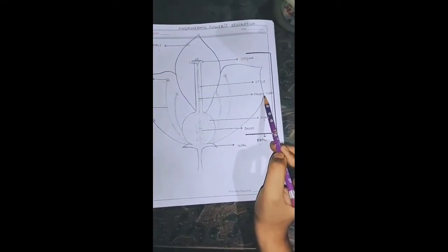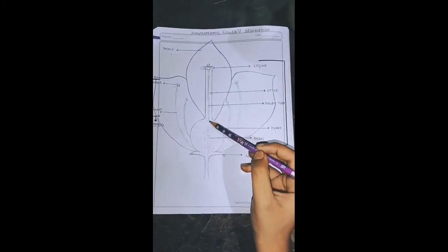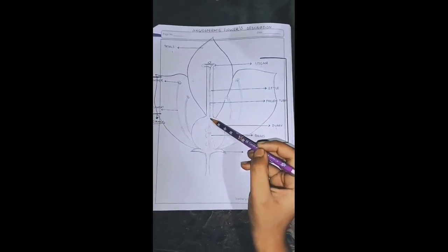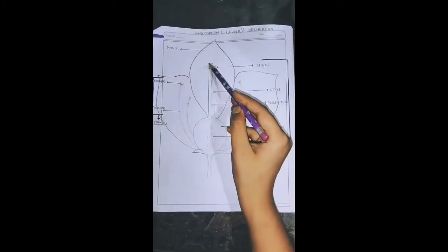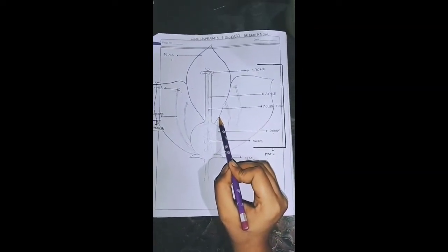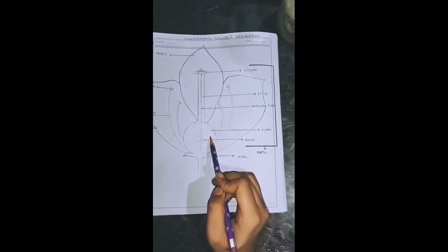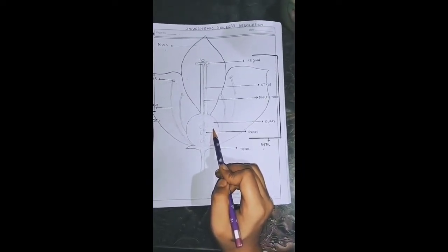Next, our part is the pollen tube. Basically, the pollen tube is a very thin tube-like structure which develops from the stigma through the style. When the pollen grain is stuck, the pollen tube helps the pollen grain reach the ovule.